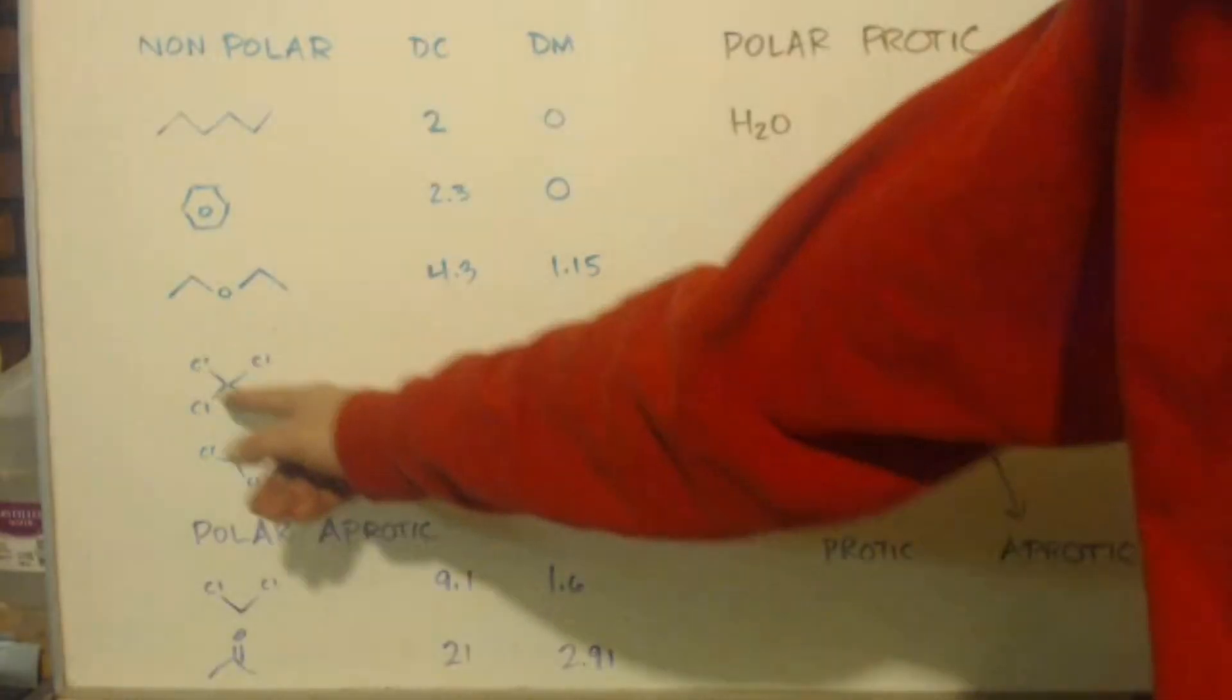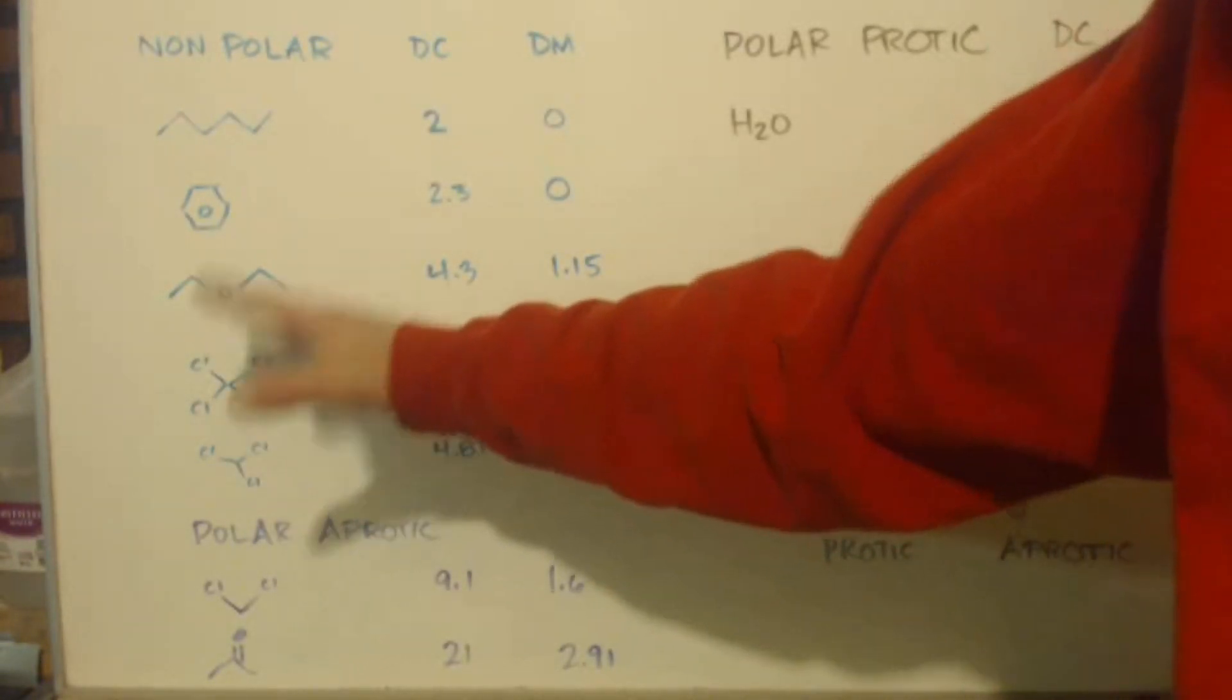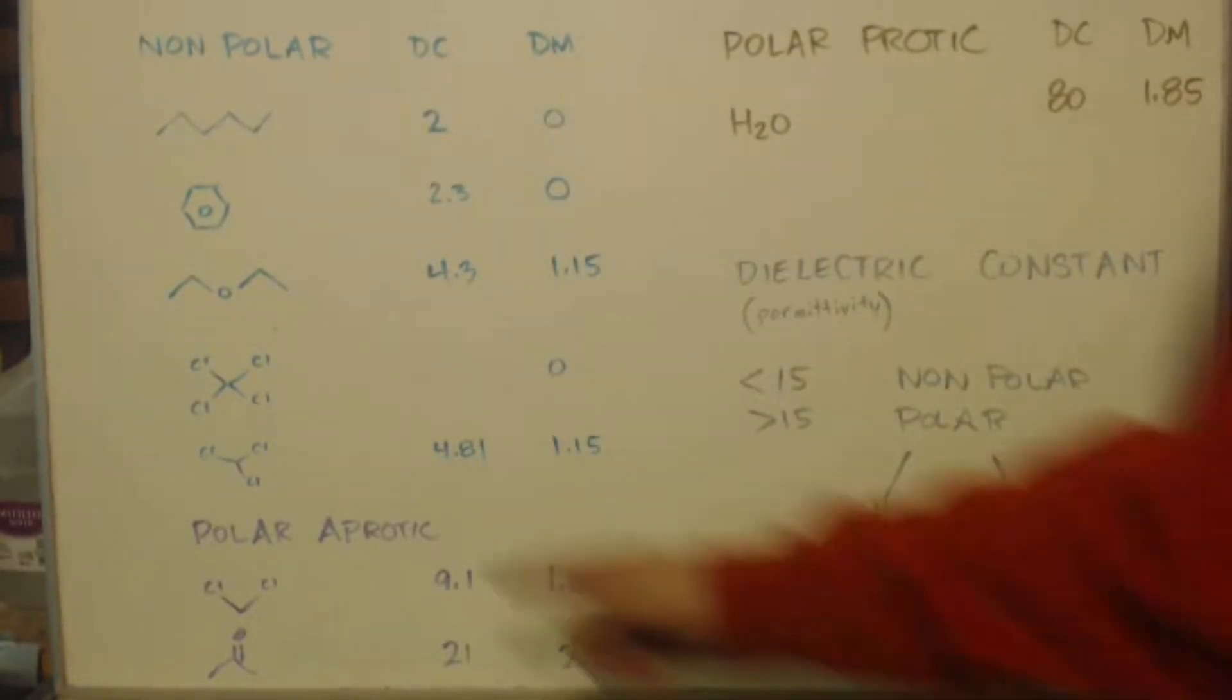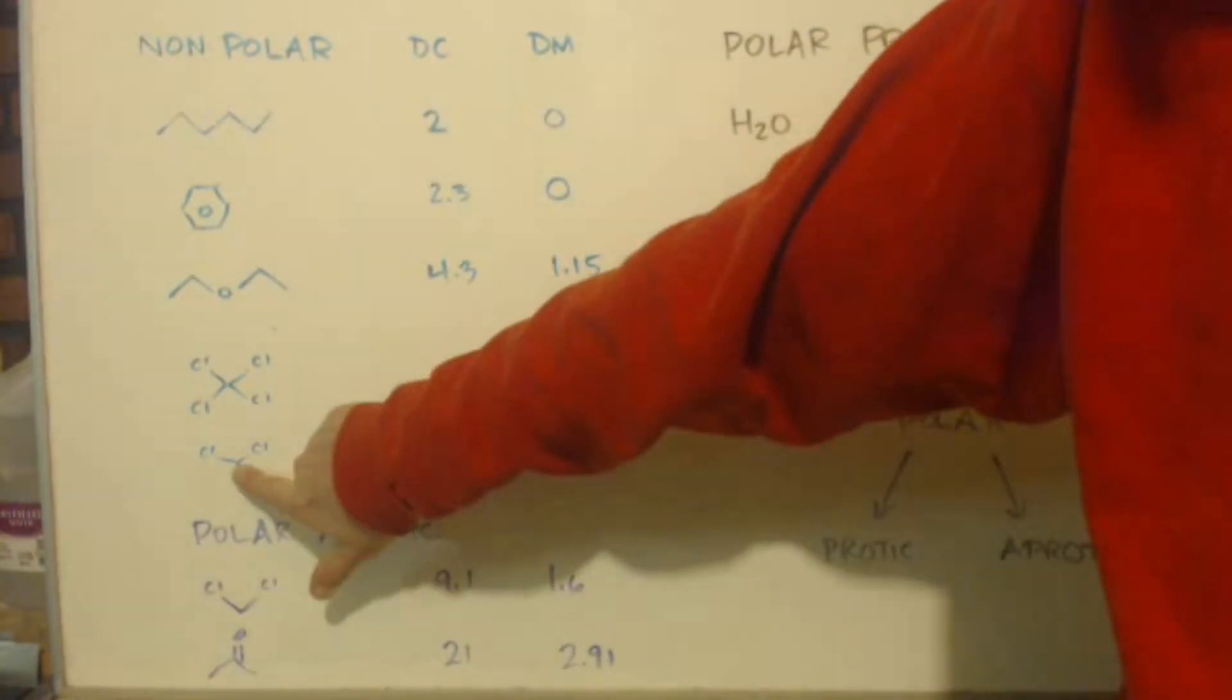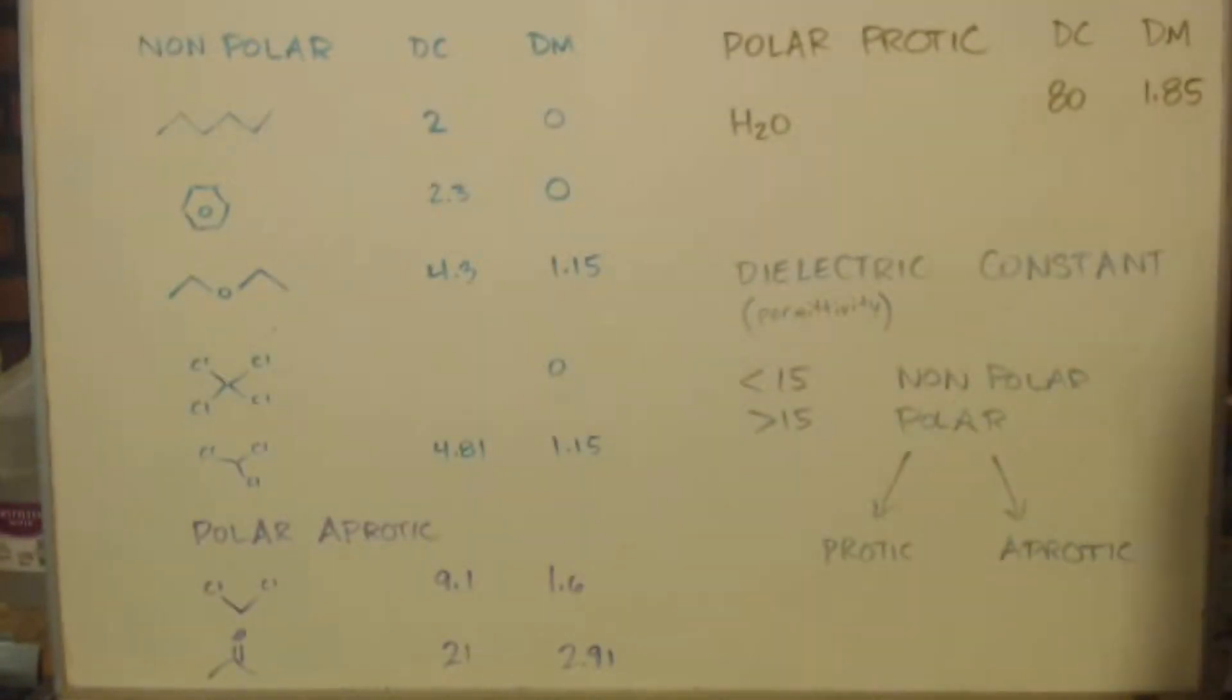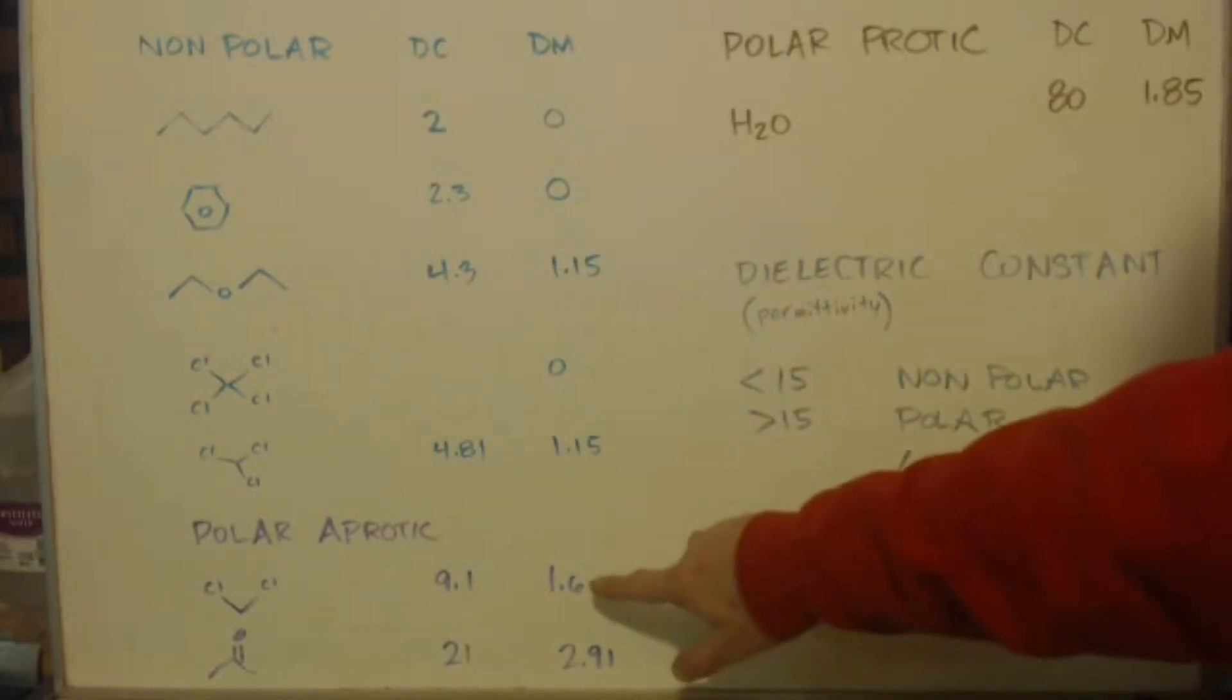As you can see here, you've got four chlorines here. All four of them cancel. These two cancel. These two cancel. They all cancel out, so you have zero. That's why it's non-polar. Same with this. If you only had two chlorines, it would be polar, but you add this one chlorine in, and it kind of takes it down even lower from a 9.1 to a 4.8, and you can see the dipole moment goes down, too.